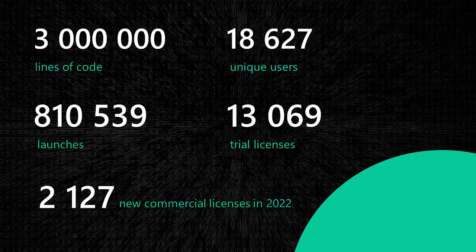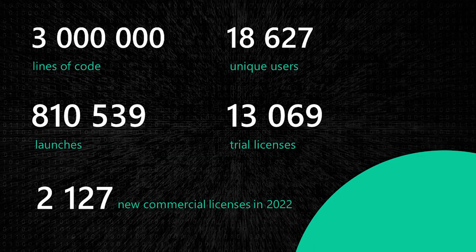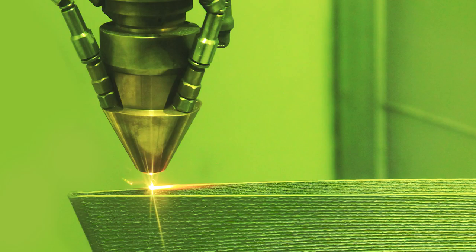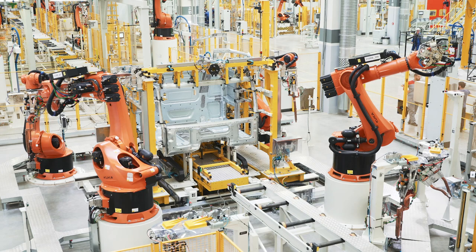Today Sprutcam X is comprised of 3 million lines of code, decades of expertise and a flawless UI UX. We are helping over 18,000 users from different industries and countries to automate programming for any production equipment, ranging from simple lathes and 3-axis milling machines to advanced hybrid centers as well as production lines which include several 6-axis industrial robots.